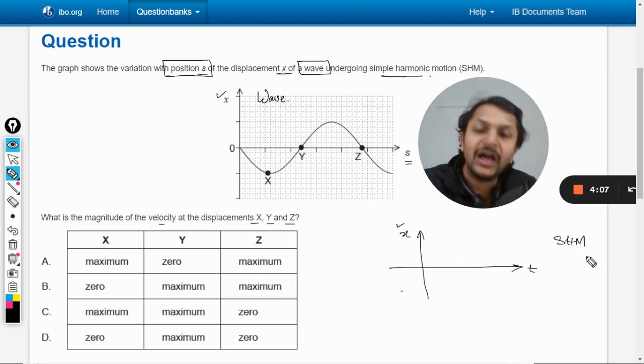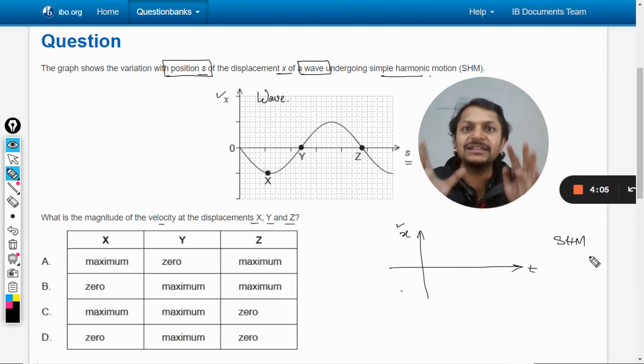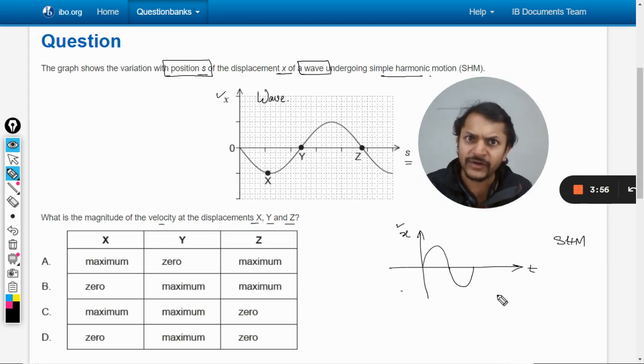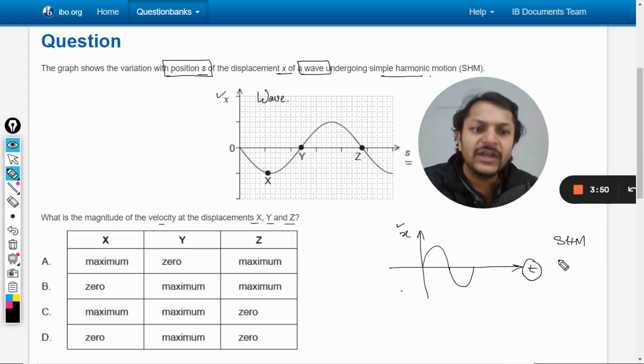This graph would also be looking similar, like sine wave or cos wave or negative sine, negative cos, whatever. It might look similar to the graph shown in the question paper, but because the x-axis is t, we come to this conclusion that this graph is pertaining to one particle.